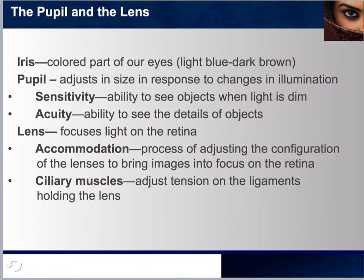The lens sits right behind the pupil and is responsible for bending the incoming light. On the outer part of our eye we have the cornea — the part you touch when putting in contact lenses — which protects the eye and helps control incoming light. From there, light enters through the pupil, and the lens focuses or bends the light onto the retina. This process is called accommodation — adjusting the configuration of the lens to bring images into focus.